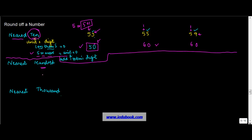Now let's see how to round off to the nearest 100. Taking examples: 135, 155, and 195. You need to round off to the nearest 100, so the rounding off is done at the hundreds place. When you round off to the nearest 100, the tens and units digits become 0, and the hundreds digit is either kept or increased by 1.